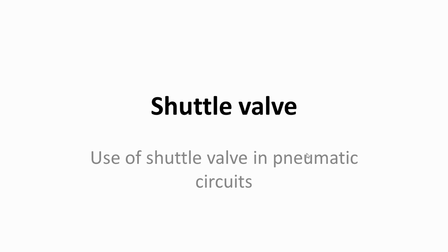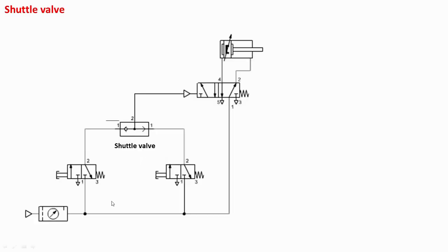In this video we'll see the use of a shuttle valve in a pneumatic circuit. The components shown include the compressed air supply, the FRL unit, a three-by-two push button operated direction control valve, and another three-by-two push button operated direction control valve which is spring controlled. Normally it is in the right envelope mode and port one is blocked — so it is a normally closed valve.